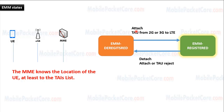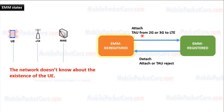The UE enters EMM registered state when it makes an attach procedure, or when the UE makes a tracking area update procedure while moving from a 2G or 3G cell to an LTE cell. While in EMM deregistered state, the UE is not attached to the network and the network does not know any information about the existence of the UE. The UE moves to EMM deregistered state when it makes a detach procedure, or if the attach procedure or the tracking area procedure is rejected from the network.